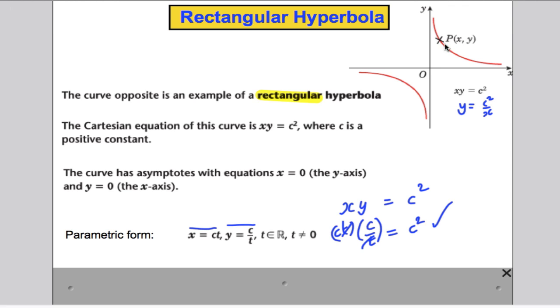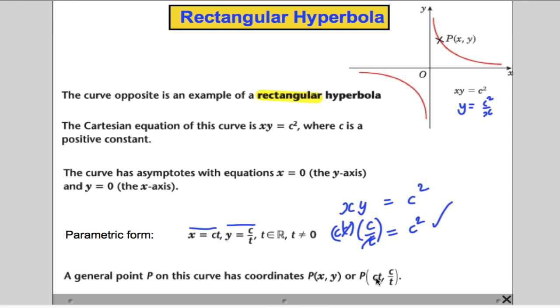And you need to know the parametric form. So, that tells us that any point on the curve can either be written as (x,y), its x coordinate and its y coordinate, or it can be written as ct for x and c/t for y. For c, that positive number in the equation xy = c², and t, the parameter that we've introduced. And that's all I wanted to say about a rectangular hyperbola.